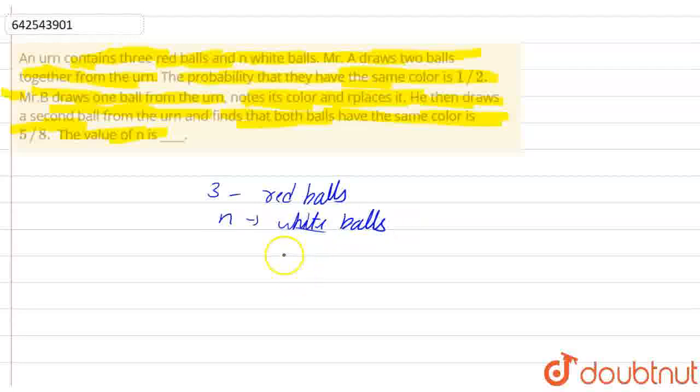First of all, it is given that Mr. Drou drew 2 balls together. So it can be from 3 red balls, so probability of that will be 3C2, or it can be from n white balls, that can be nC2. So the probability will be n plus 3C2.